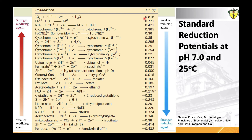The redox potentials of all other substances lie between that of ferredoxin and oxygen. The relative positions of redox systems allow prediction of the direction of flow of electrons from one redox couple to another.